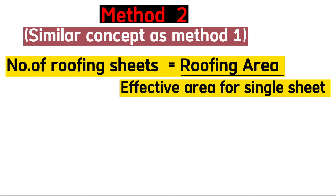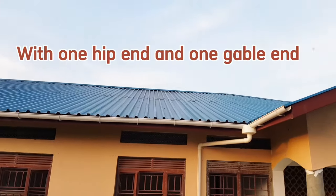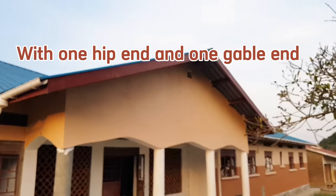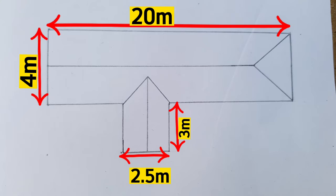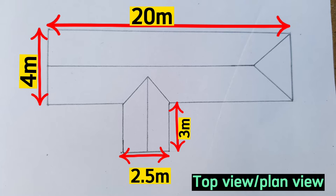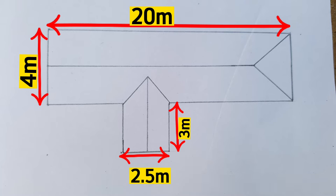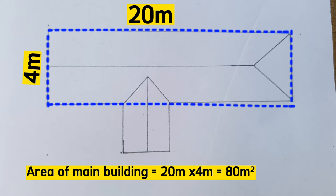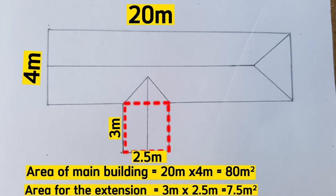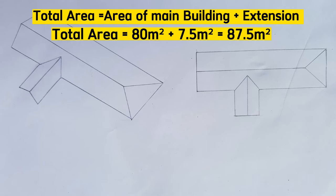Considering a hip roof of this design — to get the approximate surface area we multiply the length and width of the house. The length is 20 m and the width is 4 m, with an extension of 3 m × 2.5 m. We calculate the roof area for each portion separately. Area of the main building (blue dash lines) = 20 × 4 = 80 m². The extension = 3 × 2.5 = 7.5 m². Adding these gives 87.5 m².